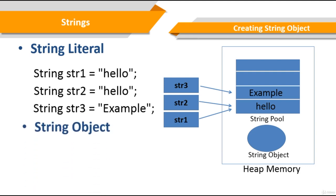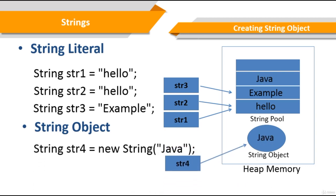Another way to create a string object is by using the new keyword. This creates two objects and one reference variable — the variable refers to the object in the heap. As shown in the diagram, a new string object with the string 'Java' is created in the heap. Also, the same string object is created in the string pool because the pool doesn't contain the string 'Java'. However, Str4 refers only to the string object in the heap, not the string pool.